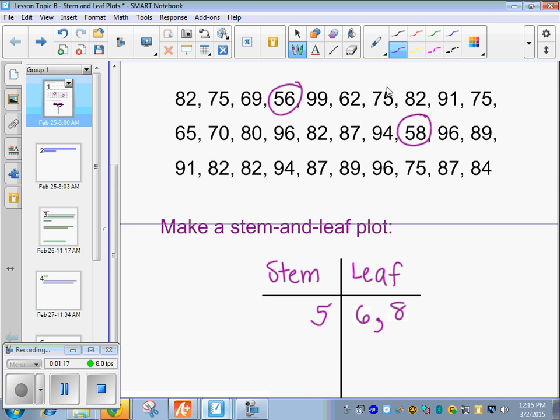And it goes in order from least to greatest. Alright, and those are all the 50s. So now we're going to do anything in the 60s. So we've got a 69 here, we've got a 65, we've got a 62. So now we put a 6 here, and what would go over here? 2, 5, 9. It has to go in order: 62, 65, 69. I'm going to cross these off as I go.